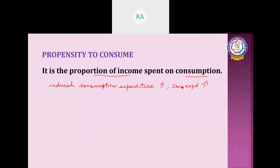But even at zero level of income, there is some minimum level of consumption. We call that autonomous consumption expenditure. This is nothing but the minimum level of consumption, even at zero level of income.